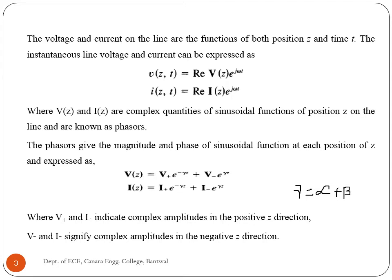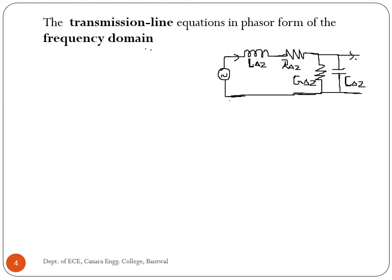Alpha (α) is the attenuation constant in nepers per unit length; beta (β) is the phase constant in radians per unit length. To find the transmission line equations in phasor form in the frequency domain, consider a transmission line section of length ΔZ. When voltage is applied to the source, the current at one loop is I and at the next is I + ΔI, and the voltage changes to V + ΔV.